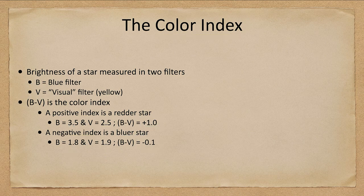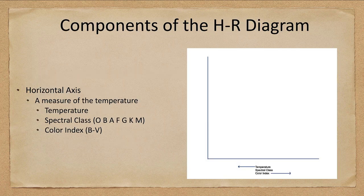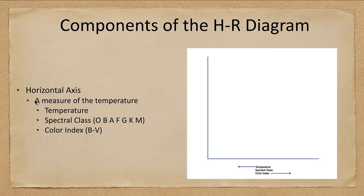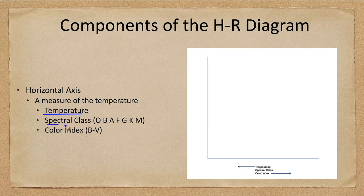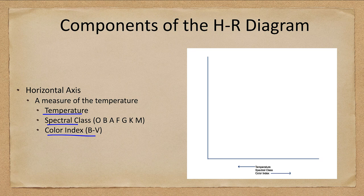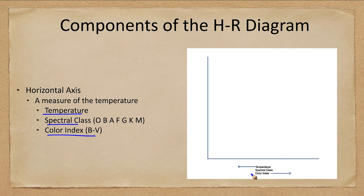Now let's look at the components of the HR diagram. First of all, on the horizontal axis, we have to look at a couple things. We look at a measure of the temperature, which could be temperature, spectral class, or color index. Those are three different things that we can plot on the horizontal axis. Note that temperature increases to the left while color index numbers increase to the right.